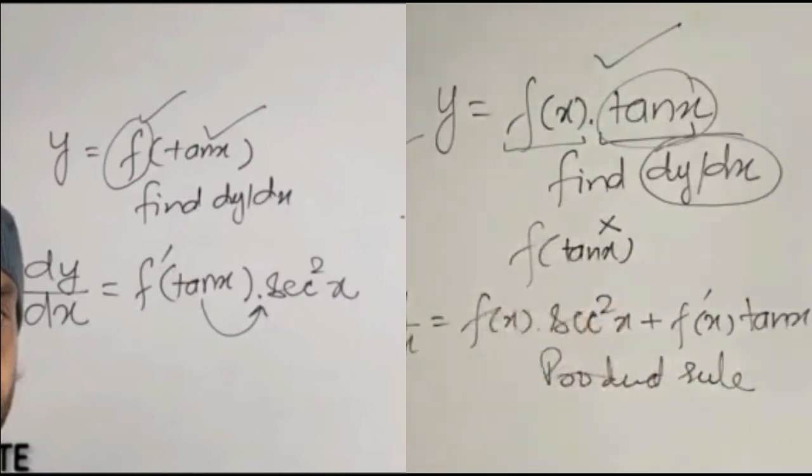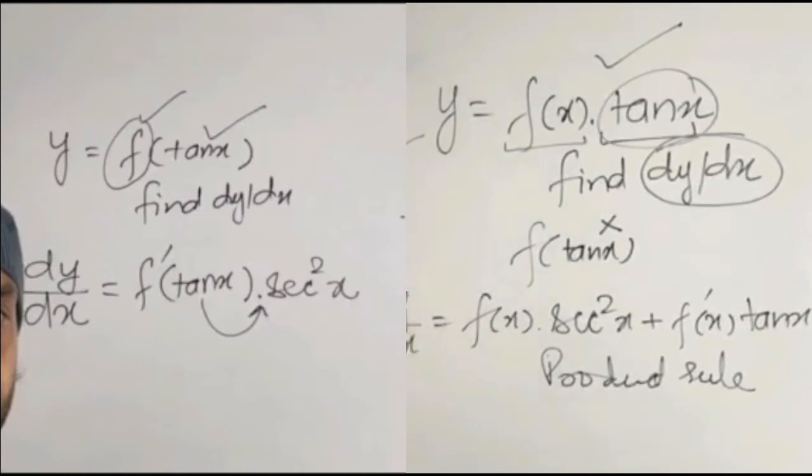And the derivative of f of tan x is f dash tan x secant square x. So you need to be careful while doing the derivative.